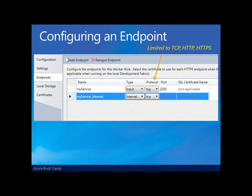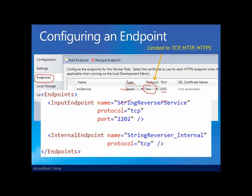Back to configuring those input and internal endpoints for our worker roles. Inside of the configuration GUI — as opposed to the actual XML — we'll find an endpoint tab for our worker roles. On that tab, you can give your worker endpoints a name, establish the type (input or internal), and the protocol used: TCP, HTTP, or HTTPS. For an externally facing input endpoint, you'll also establish a port. That's not needed for internal endpoints. The same information can also be managed directly in the XML.